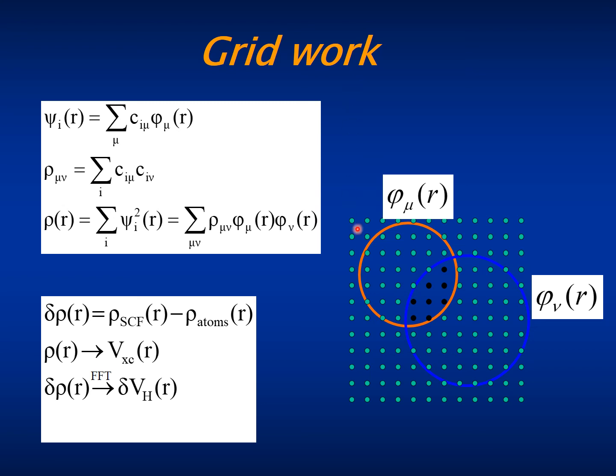The terms of the Hamiltonian that depend on potentials, electrostatic or exchange and correlation potentials, are performed in a grid of mesh points in real space.